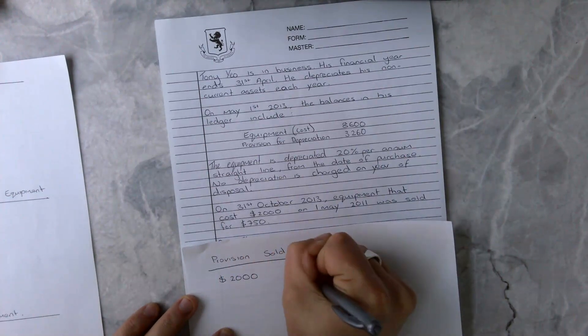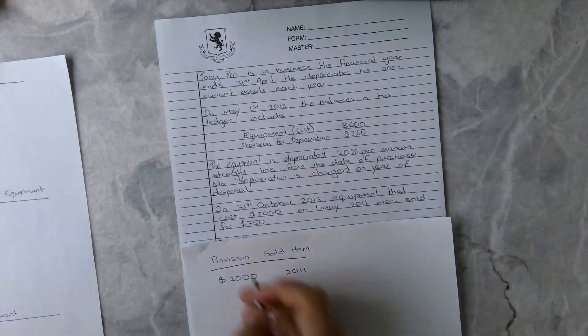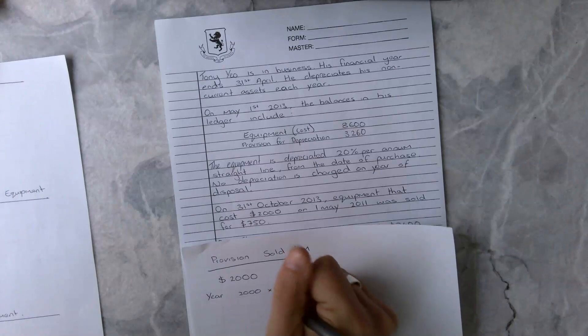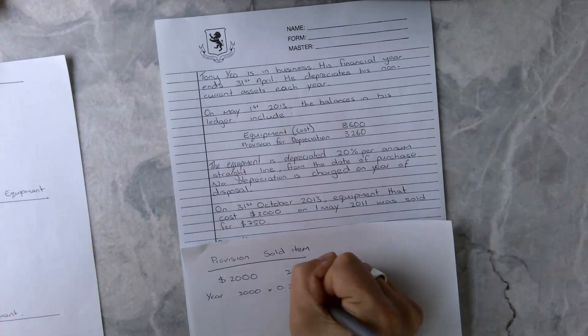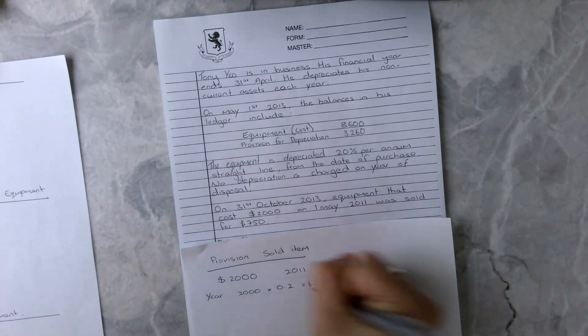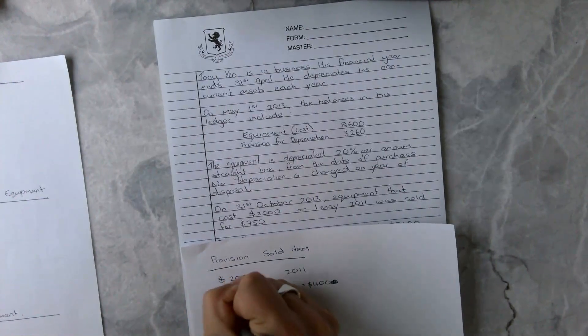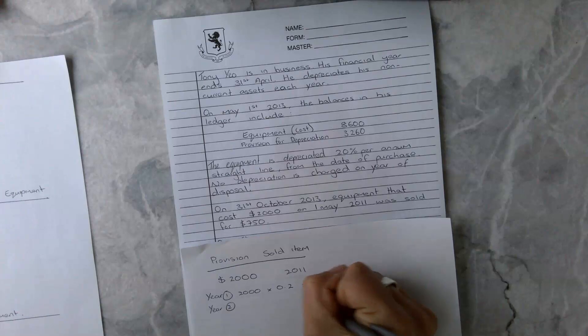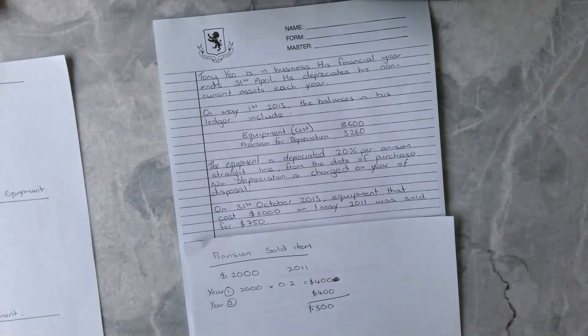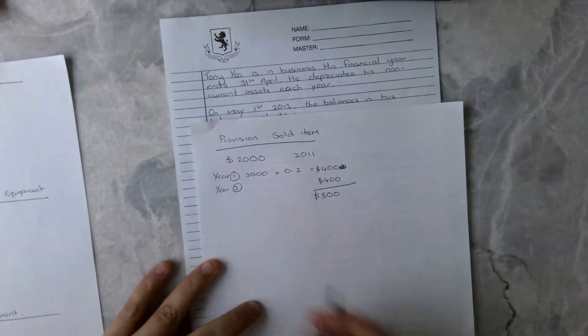We are now in 2013, so we need two years worth of depreciation. Year one is going to be $2,000 times 20%, which equals $400, not $4,000. Because it's a straight line method, year two will also be $400. So our total depreciation on the sold item so far is $800, and we need that for later on. That is our provision on our sold item.